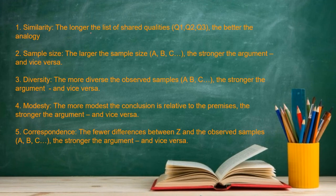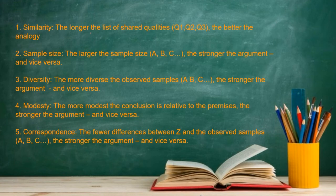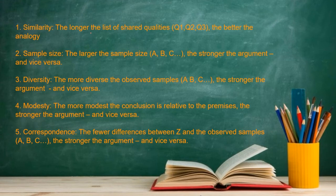There's a fifth criterion: correspondence — the fewer differences between Z and the observed samples, the stronger the argument. If all the sampled restaurants are in normal locations and the next restaurant is markedly different, that's going to be problematic. If everything else is the same but there is a significant difference, then we're going to have a bit of a problem with the strength of our argument.